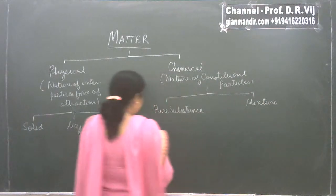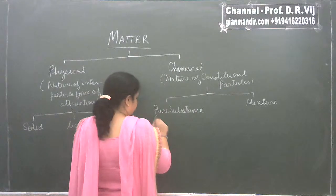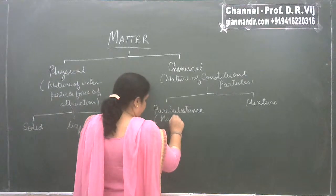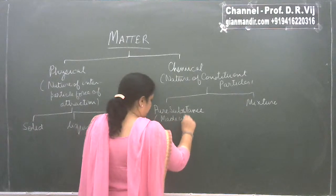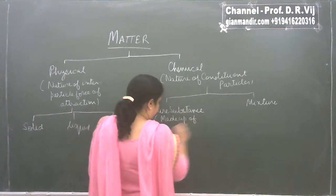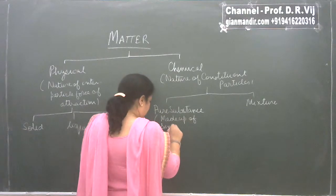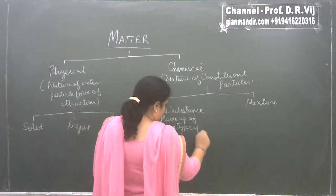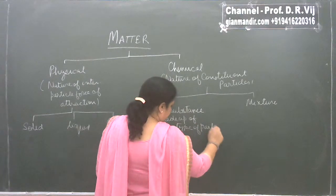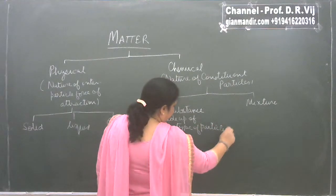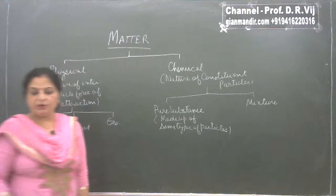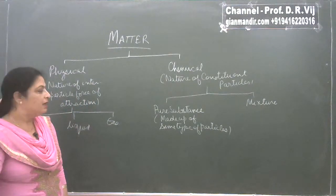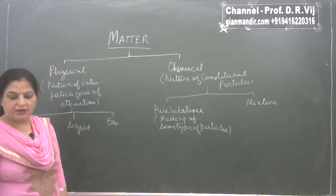Looking at pure substances — what are pure substances? These are made up of the same type of particles. In other words, in a pure substance, the constituent particles are all identical and of the same type.